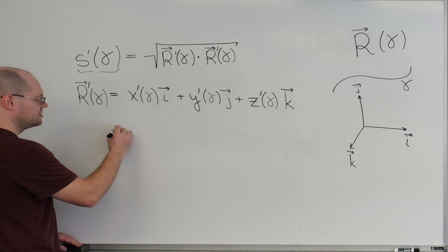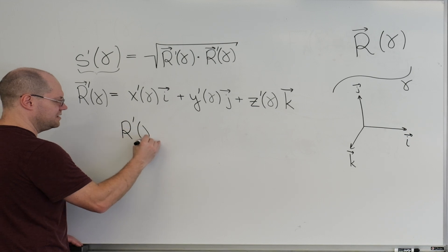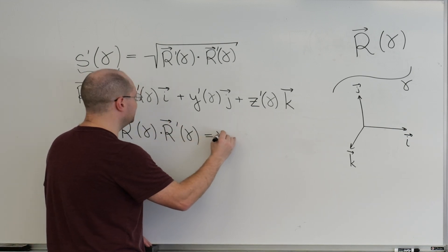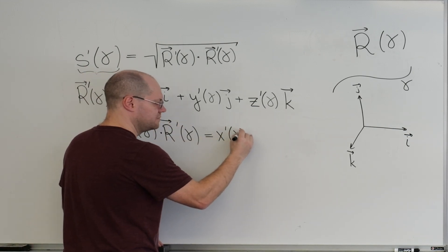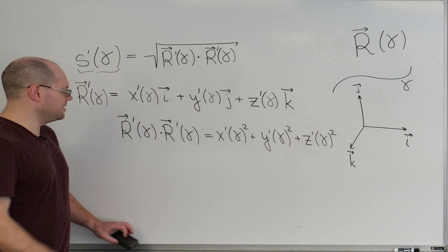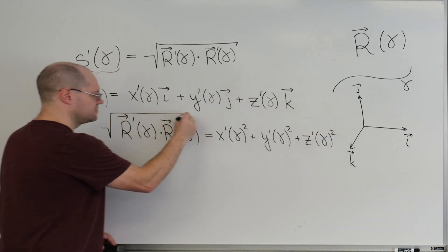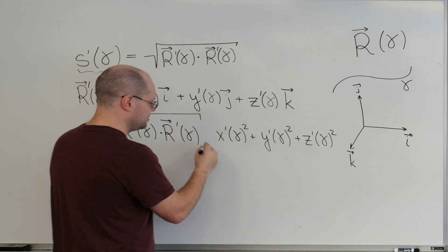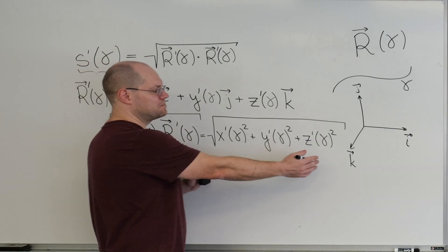But then, of course, this vector dotted with itself, it's x prime of gamma squared. And because we need this under the square root, this goes under the square root. That would be the formula. And this is practical.